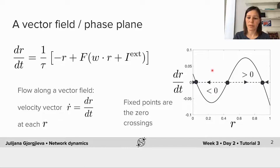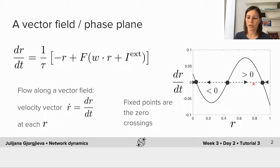We define the concept of flow in this phase plane that tells us whether the dynamics will increase or decrease in time. To do this we calculate whether the derivative — the change in activity versus time — was positive or negative. In regions where dr/dt was bigger than zero, the flow was to the right, meaning population activity R will increase in time. In regions where dr/dt was negative, the flow was to the left, meaning R will decrease in time.